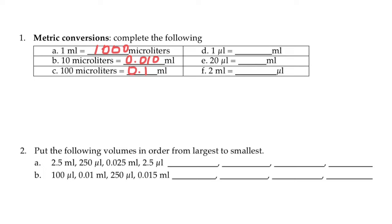Next one, one microliter is going to be 0.001 milliliter. And 20 microliters is going to be 0.020 milliliters. And two milliliters are going to be 2000 microliters.